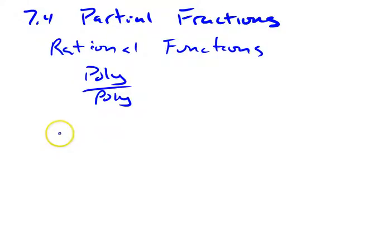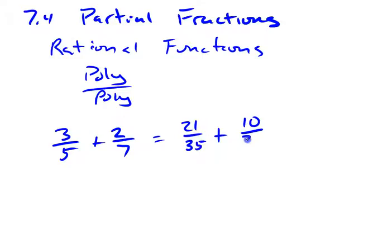So if I had something like 3/5 plus 2/7, what I do is I get common denominators, right? So I've got to multiply this first one top and bottom by 7, so this would be 21 divided by 35, and then I have to multiply this one top and bottom by 5, so that would be 10 divided by 35.